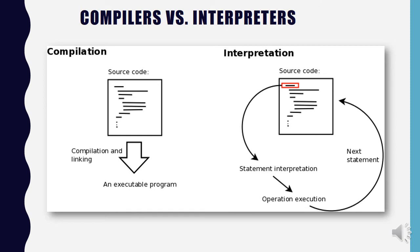To summarize: compilation is when you take the whole source code, compile it, and link it into an executable program. Whereas an interpreter takes one line, interprets it, executes it, and then takes the next statement.